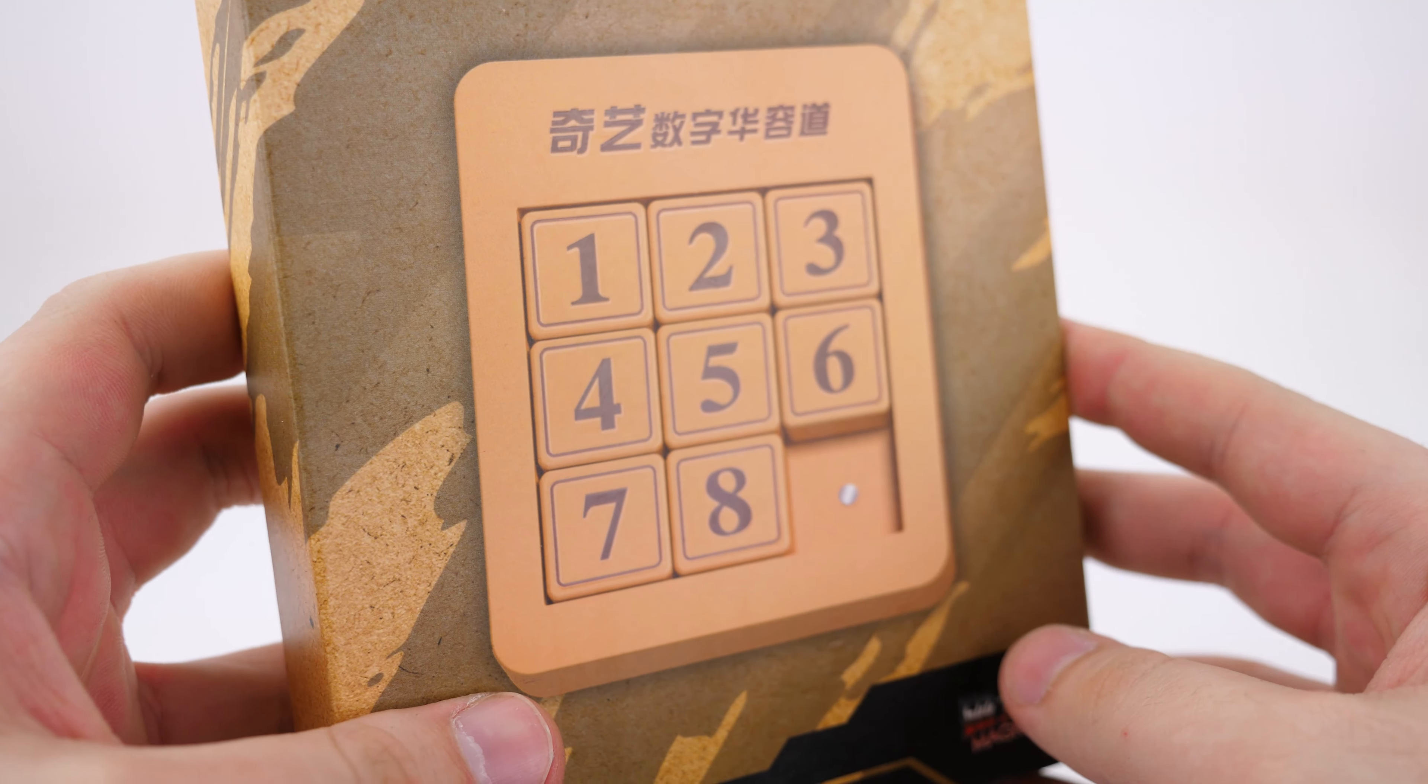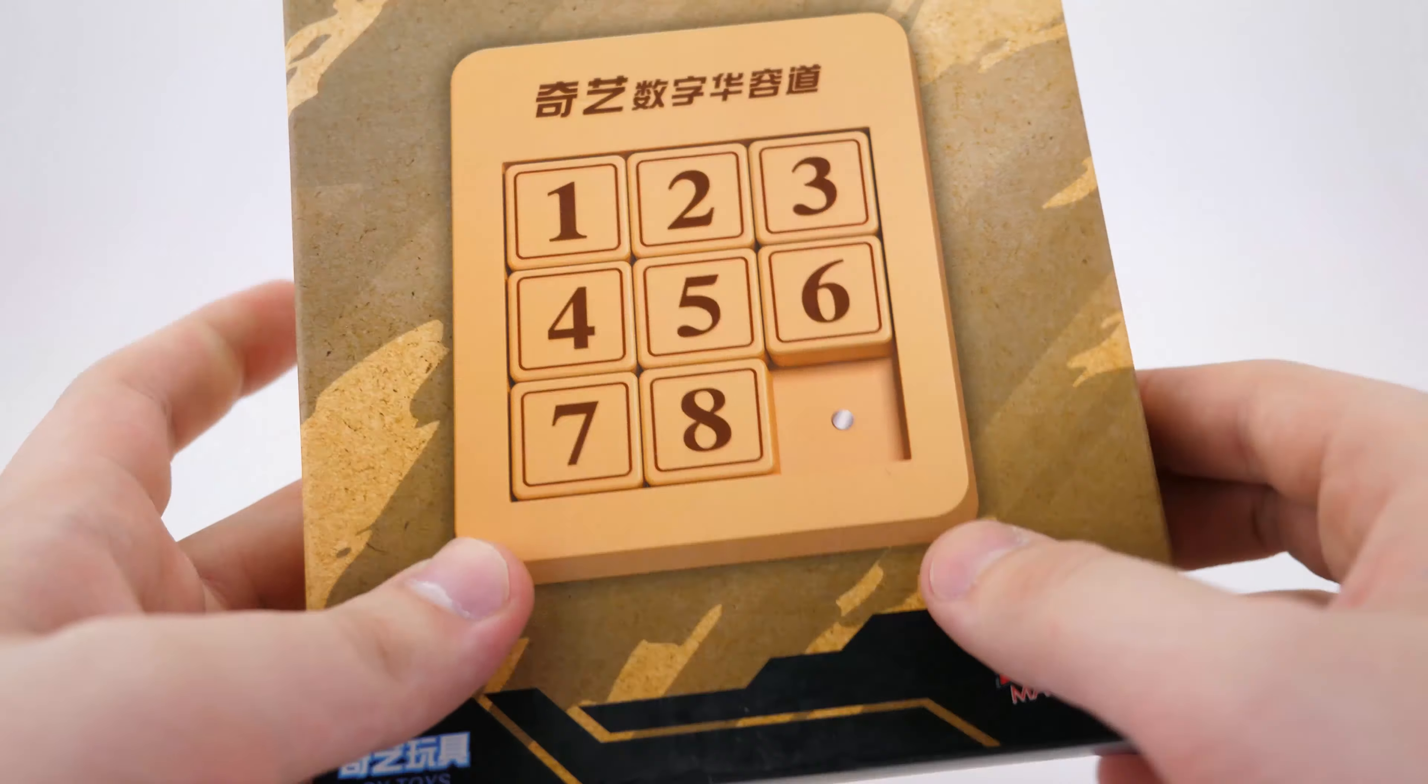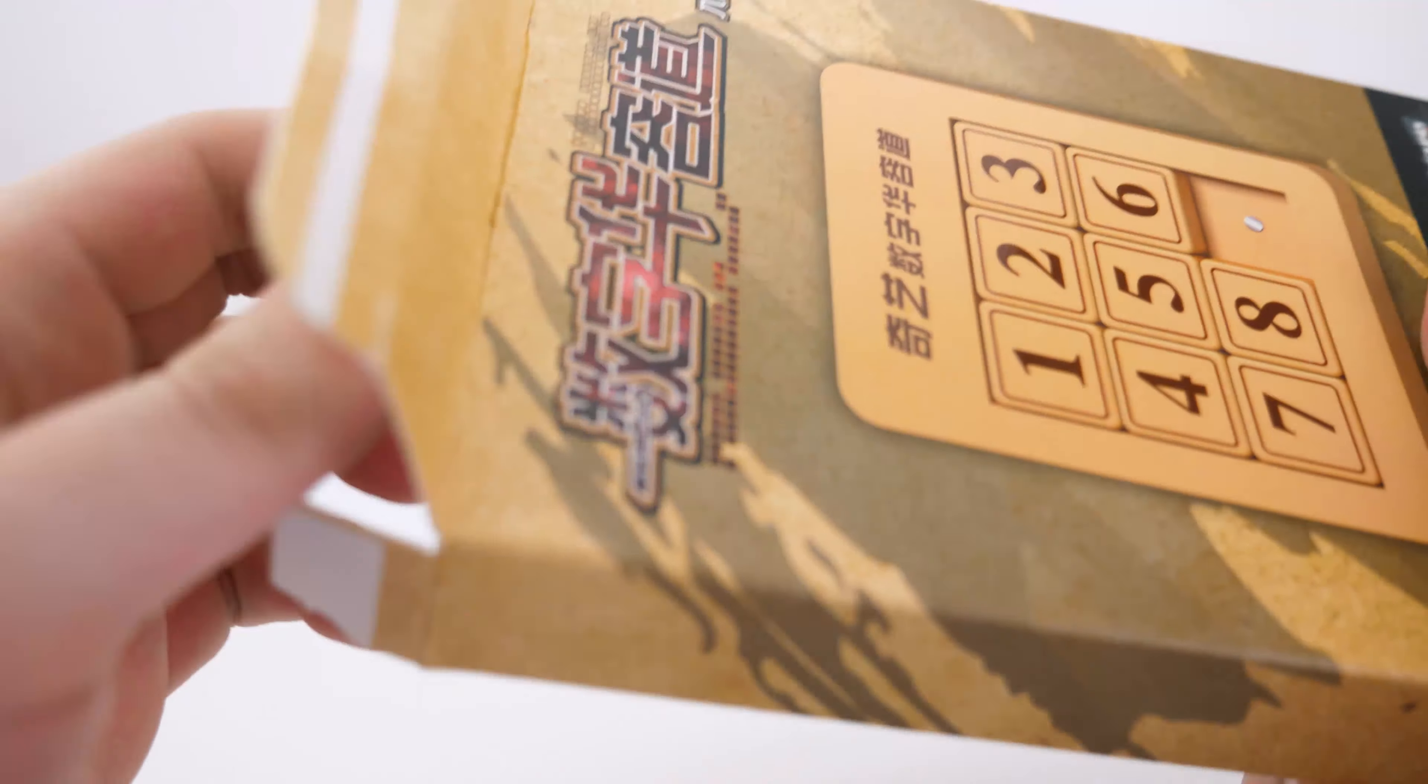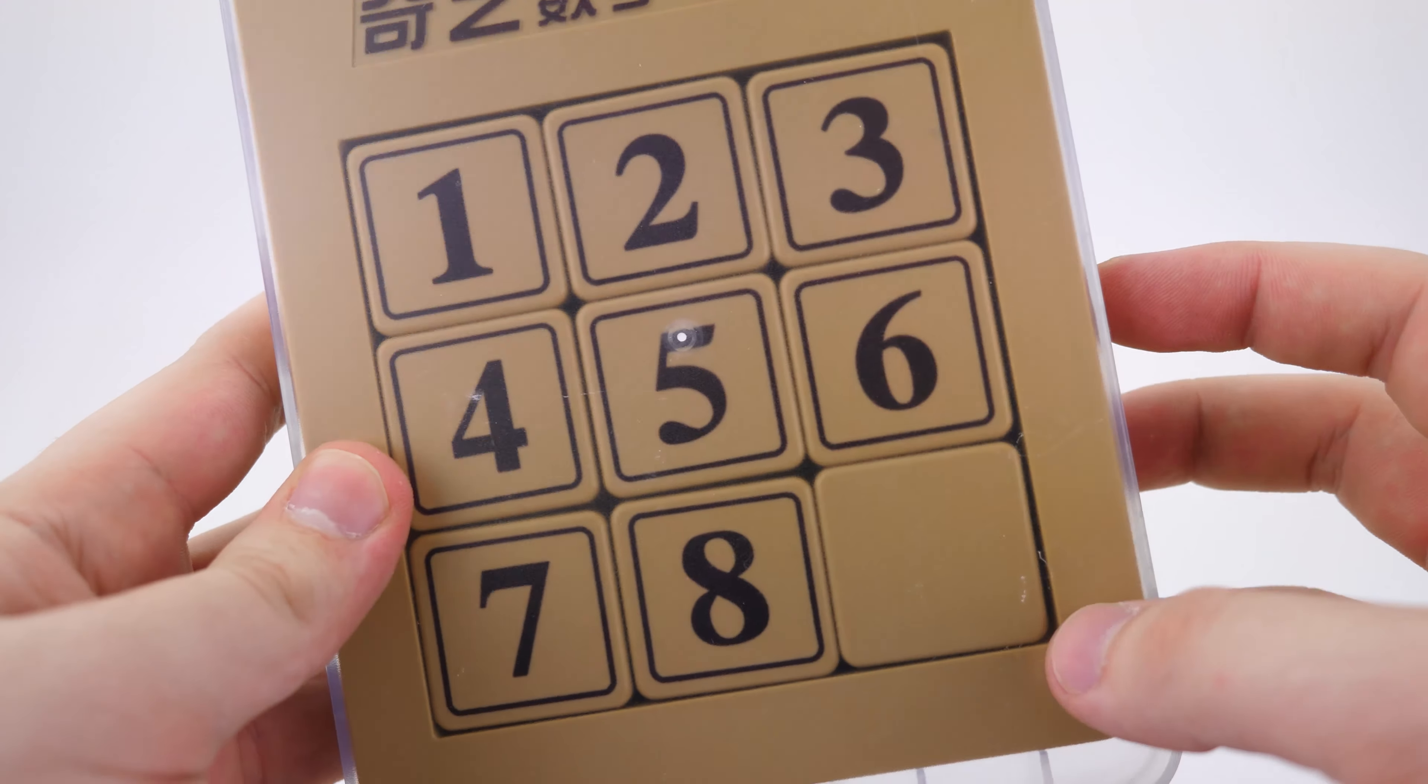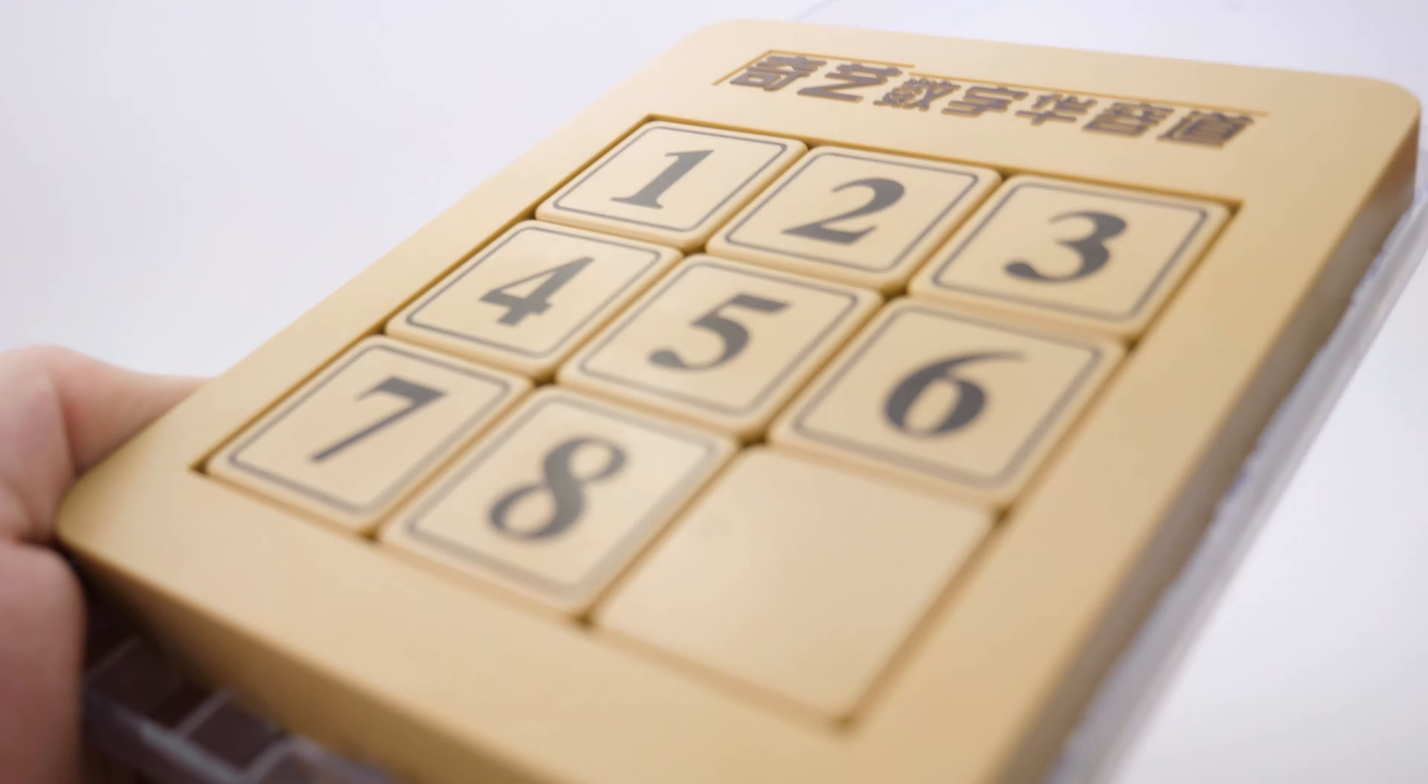And last but not least, we have the numbers sliding kiosk. So I believe they already have a numbers sliding kiosk out right now, but I believe it's one to 15, I want to say, and this is one to nine. So this is significantly smaller and I believe it will also be really cheaper. One thing I want to give Chi a massive pat on the back for is the quality of these boxes. They just feel really super good quality. I'm not sure how well it shows up on camera, but yeah, the quality of these boxes is just really good. They come in with this nice little plastic carrying case, which is good.